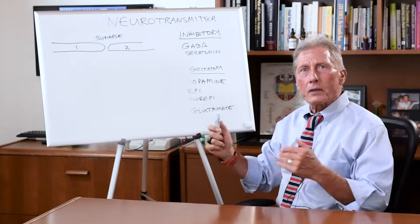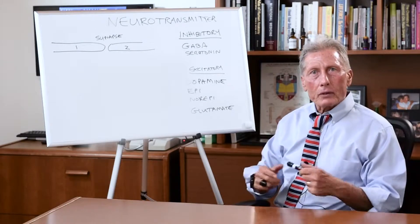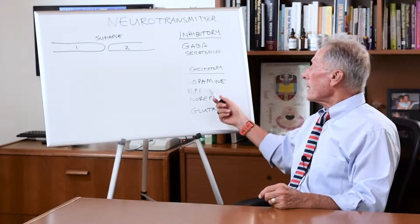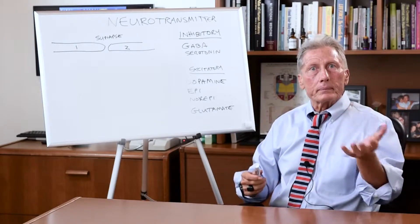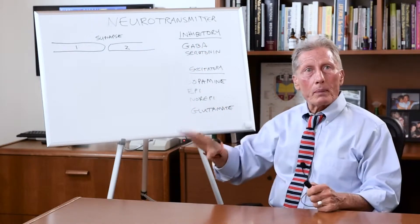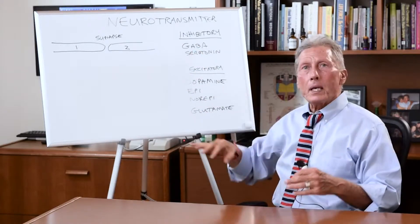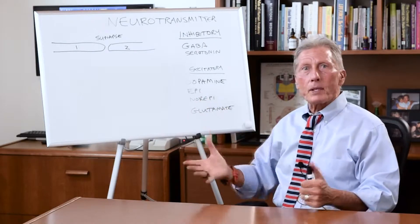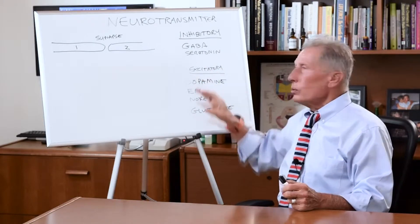So in someone who's feeling very agitated, if we measure their level of neurotransmitters, we will find that the excitatory ones - dopamine, epinephrine, norepinephrine, glutamate - they're up. Or they may be normal, but the inhibitory ones may be very low. If you don't have enough of these, you might be anxious or you might be depressed. And if you have too much of these, you might be jacked up. Now these all have to do with how we feel.